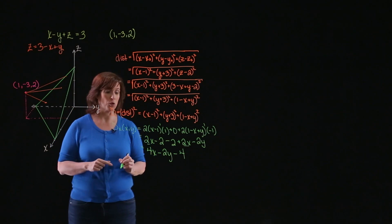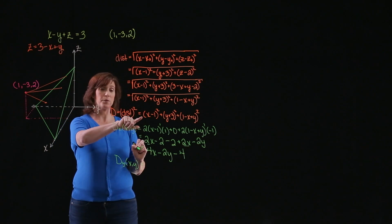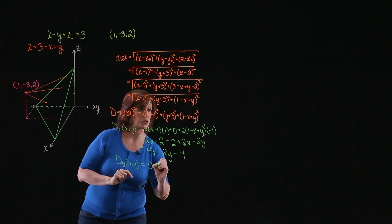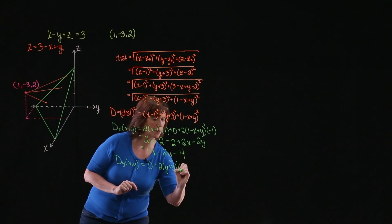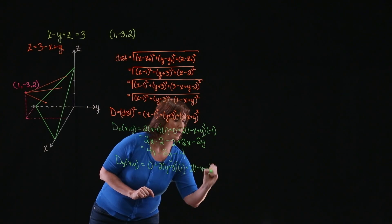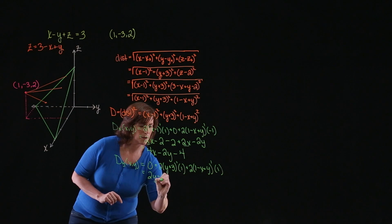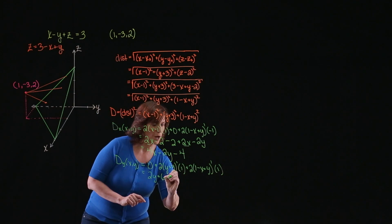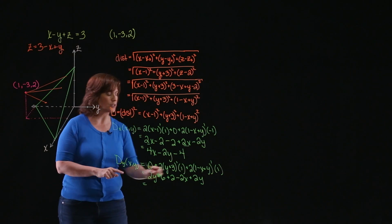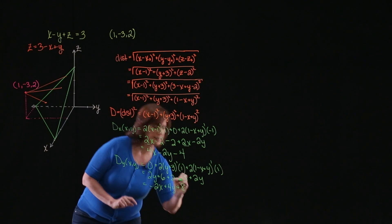Now I need to find the partial with respect to y. I treat x as a constant, so the first piece is 0. Then I have 2 times the quantity y plus 3 to the first power times 1, plus 2 times the quantity 1 minus x plus y to the first power times 1, which gives me 2y plus 6 plus 2 minus 2x plus 2y. Combining like terms: negative 2x plus 4y plus 8.